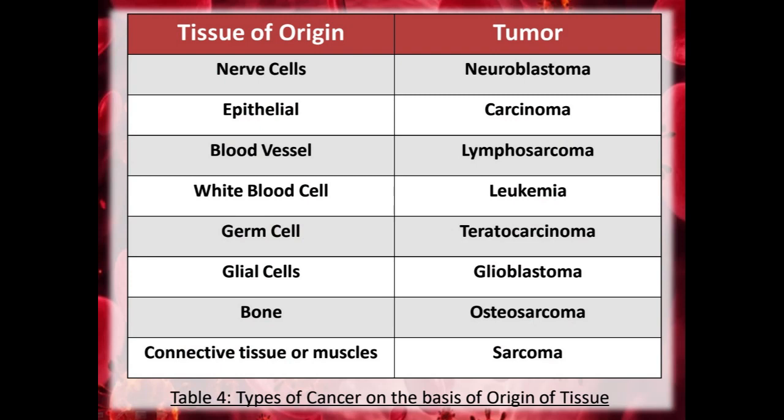There is another classification of cancer types on the basis of tissue of origin. For nerve cells the tumour is known as neuroblastoma; in epithelial cells it is carcinoma; in blood vessels it is lymphosarcoma; in white blood cells it is leukemia; in germ cells it is teratocarcinoma; in glial cells it is glioblastoma; in bone it is osteosarcoma; and in connective tissue or muscle it is known as sarcoma.